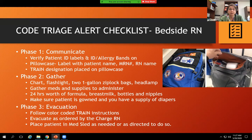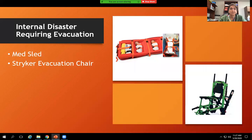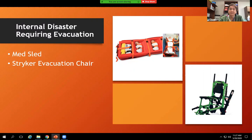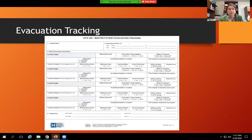Phase three is evacuation: follow color-coded TRAIN instructions, evacuate as ordered by the charge nurse, and place the patient in a med sled or evacu chair as appropriate. The backpacks in each room contain evacuation supplies. For internal disasters requiring evacuation, you have the med sled and Stryker evacuation chair — there will be videos on how to use them, and on Skills Day you will practice evacuation with both modalities. Evacuation tracking sheets record all patient information including mode of transport and destination hospital.